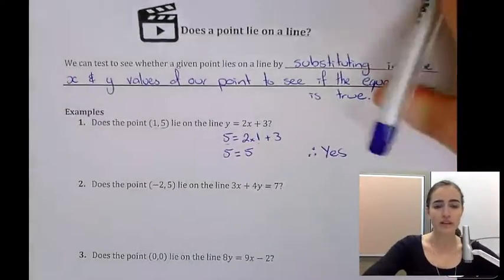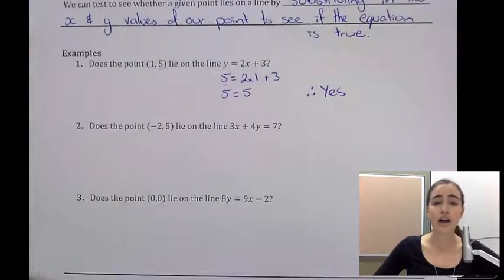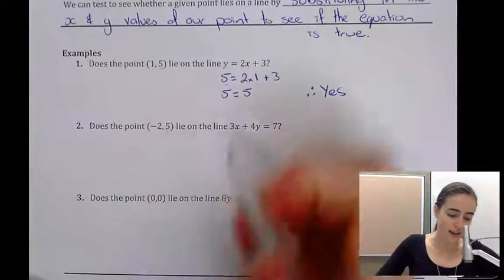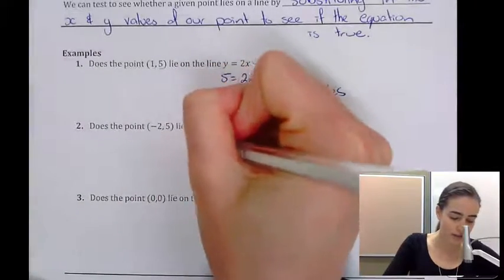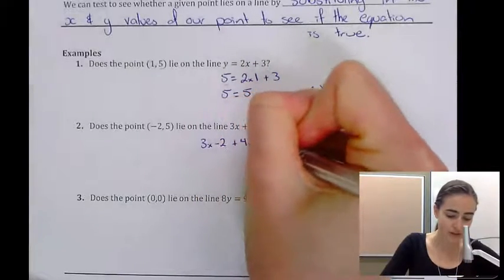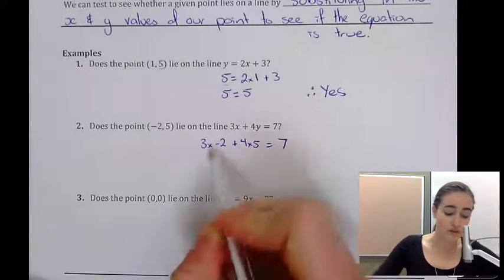Let's have a look at another one. This one says: does the point (-2, 5) lie on the line 3x plus 4y equals 7? Substituting in again, this is our x and our y, so we would have 3 times minus 2 plus 4 times 5 equals 7. We're trying to see if this is true.